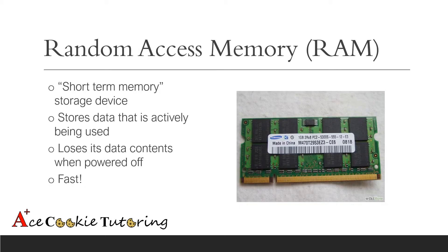Next, we have the random access memory, also called RAM. This is essentially a short-term memory storage device. It stores the data that is actively being used by open programs and software, but it loses its data contents when powered off. We have this in the computer because it's extremely fast.